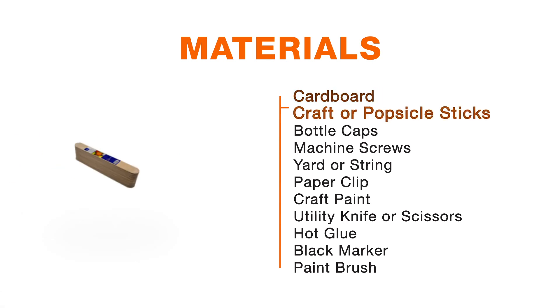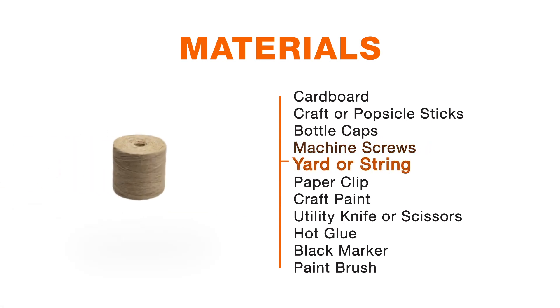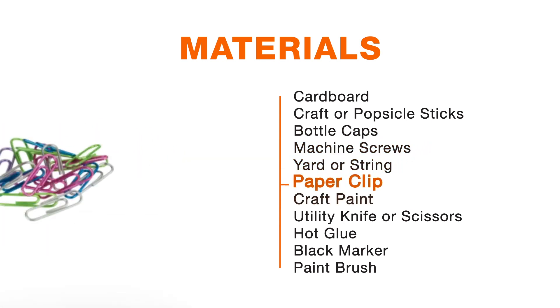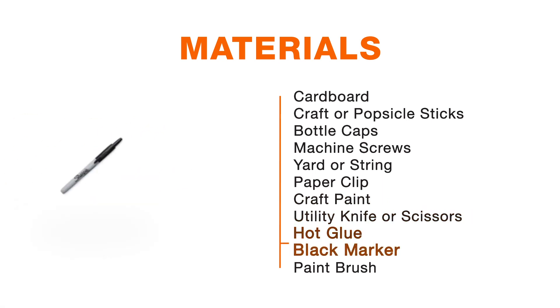You'll need some cardboard, craft sticks or popsicle sticks, milk or water bottle plastic caps, machine screws, yarn or string, paperclip, craft paint, but you'll also need a utility knife or scissors, hot glue, a black marker, and a paintbrush. This is the template we're going to use to make the body of the crane, and you can find this template in the blog post tutorial and download that for free.